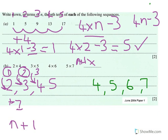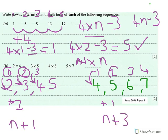The second sequence is four, five, six, seven. This one is also add one, so the rule must be n something. How do we change one into four? It must be add three. Is it n plus three? Check: two plus three is five, three plus three is six, four plus three is seven. So the right-hand side is n plus three.